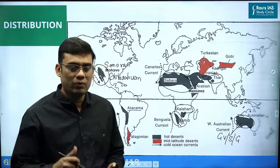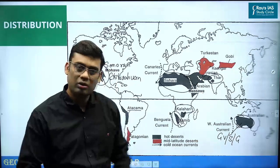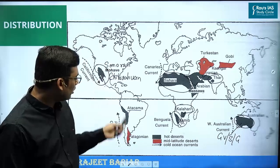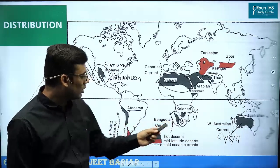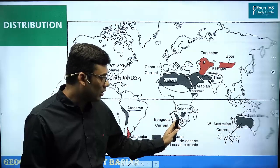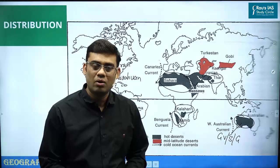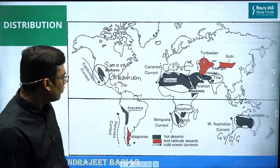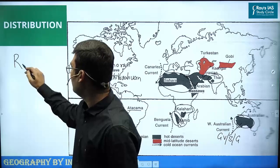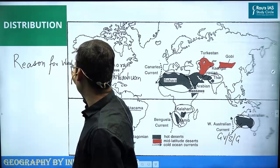If we exclude the Sahara, Arabian, Iranian, and Thar deserts, what is common among the rest is that these deserts are located on the western side of the continents — the western margin of North America, South America, or Africa, specifically the Namib Desert, or the western side of Australia, the Great Australian Desert. The question is: what are the primary reasons for this western location?